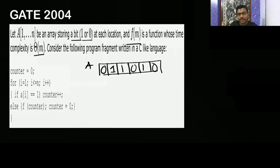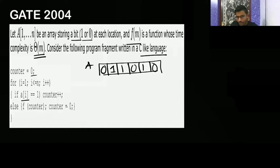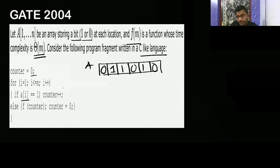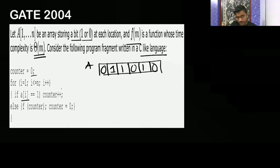f(m) is a function whose time complexity is Θ(n). Now consider the program fragment written in a C-like language. In C, counter is initialized to 0. For i equal to 1, i less than or equal to n, i plus plus: if a[i] equals 1, then counter plus plus; else it will call the function f on counter. Then after that function call, it will again make counter equal to 0.